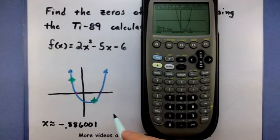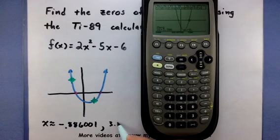So it looks like the other one, that one's approximately at 3.386. And there you go. We found an approximation to both of our zeros for our quadratic function.